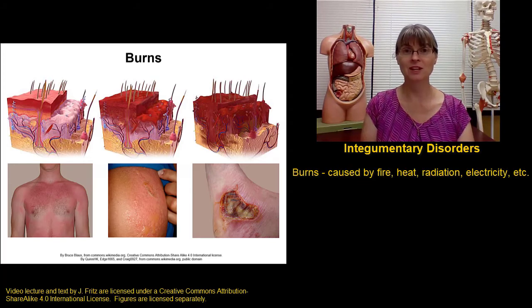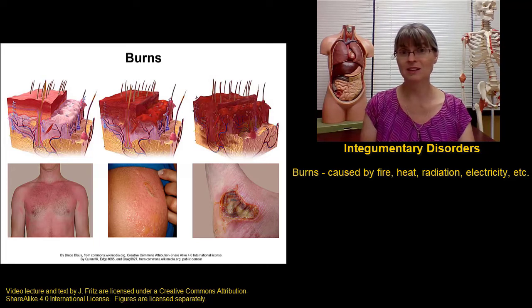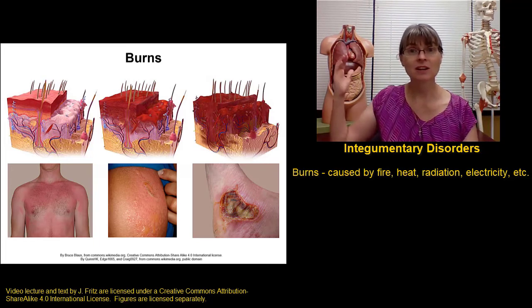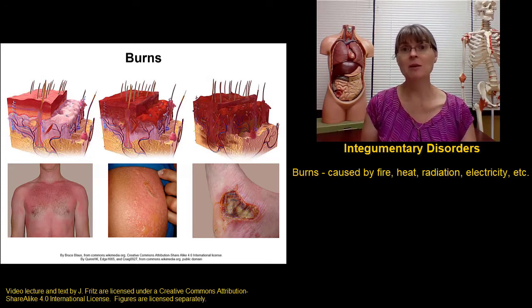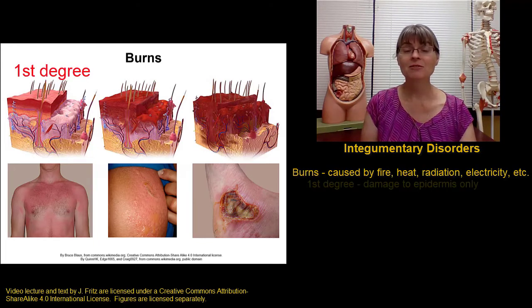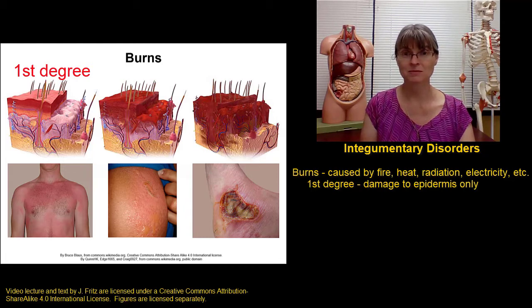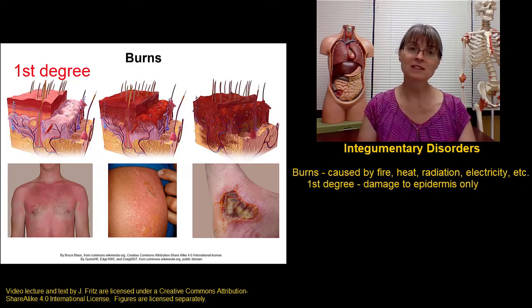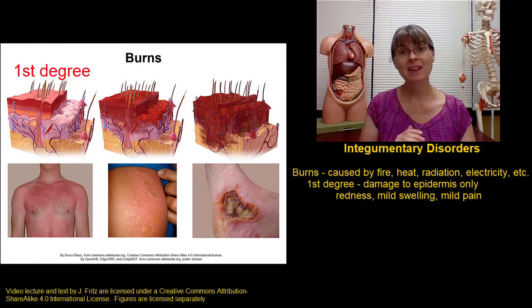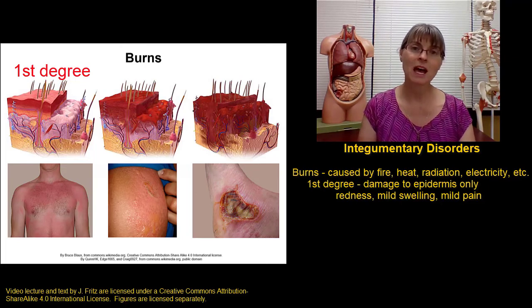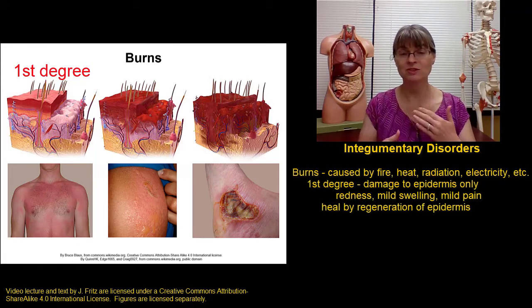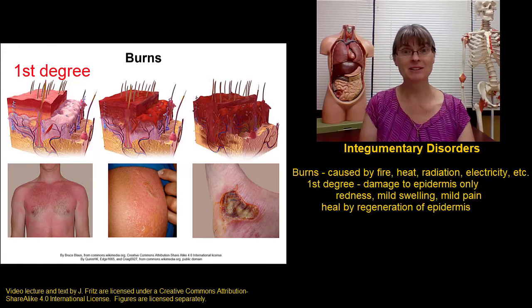Burns are another common disorder of the integumentary system. Burns can be caused by many different things, including fire, hot objects, sunlight, UV radiation, electricity, or chemicals. Regardless of what causes the burn, we classify burns based on how much tissue is damaged. In a first-degree burn, only the epidermis is damaged. Those damaged cells will release signals to activate inflammation, so we can see symptoms like redness and possibly swelling, and they can be mildly painful. Because the damage is only to the epidermis, these burns heal by regeneration — we divide the cells of the epidermis to make more cells — often in just a day or two. A sunburn is a common example of a first-degree burn.